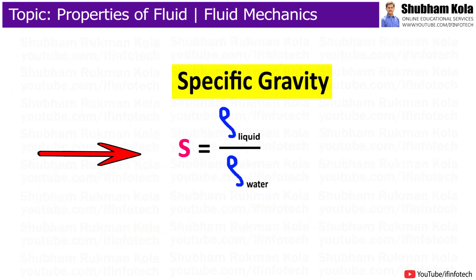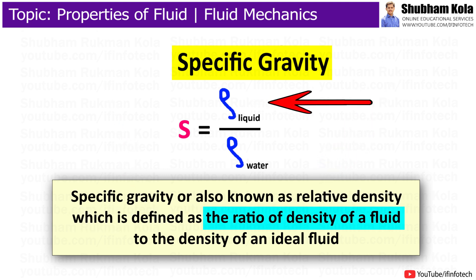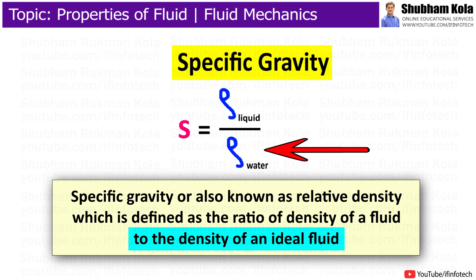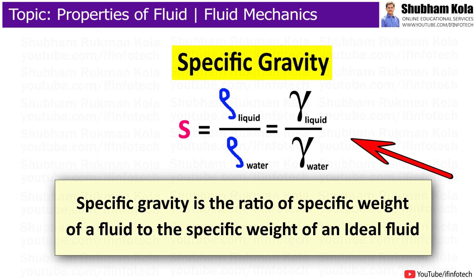The next term is specific gravity, also known as relative density, which is defined as the ratio of density of a fluid to the density of an ideal fluid. The ideal fluid for liquids is water, and ideal fluid for gases is air. Alternatively, specific gravity is the ratio of specific weight of fluid to the specific weight of an ideal fluid.